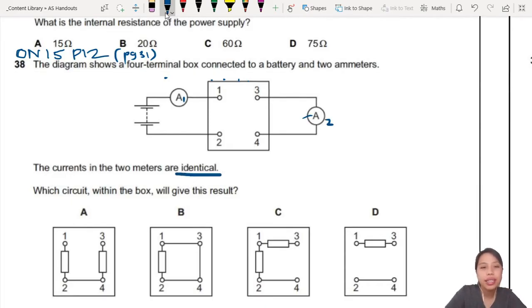The currents in the meters are identical. Which circuit inside will give this result? So you look at this and you're like, wow. If you just draw option A inside here, it's going to look something like this.